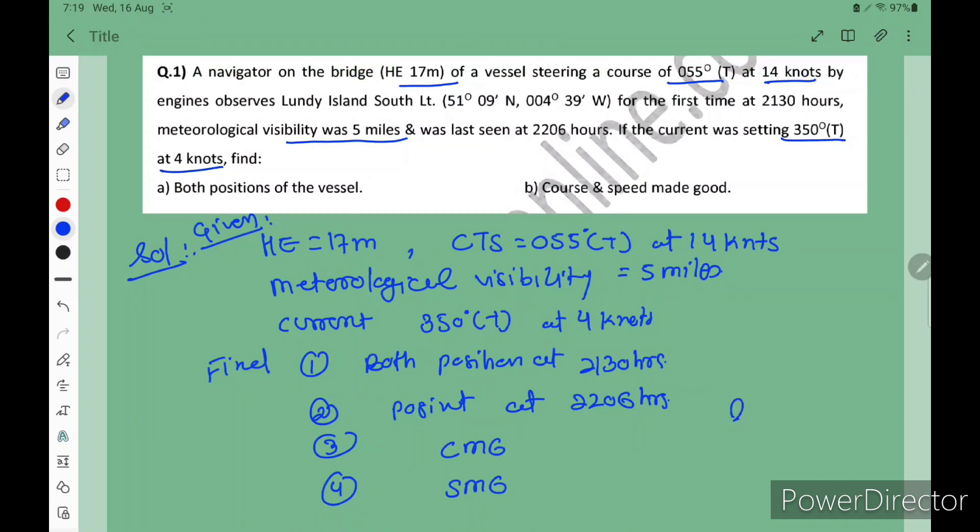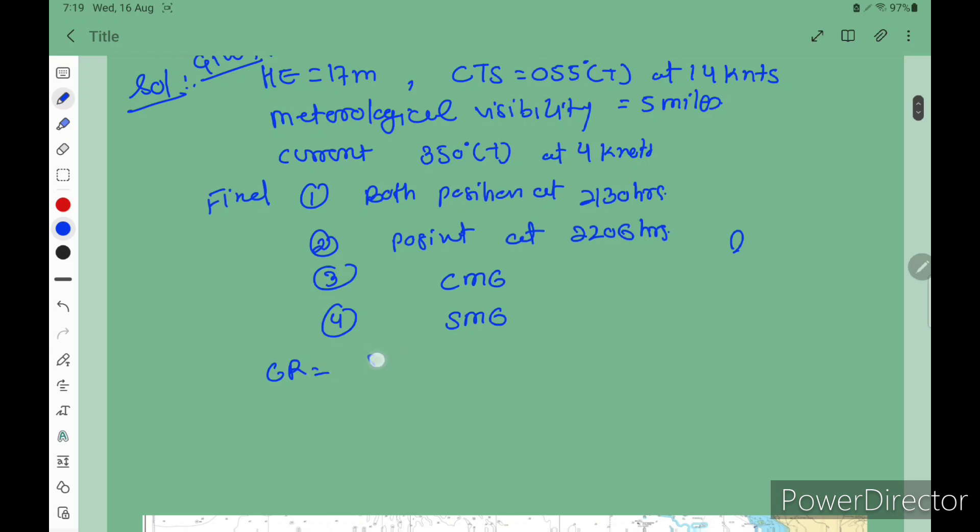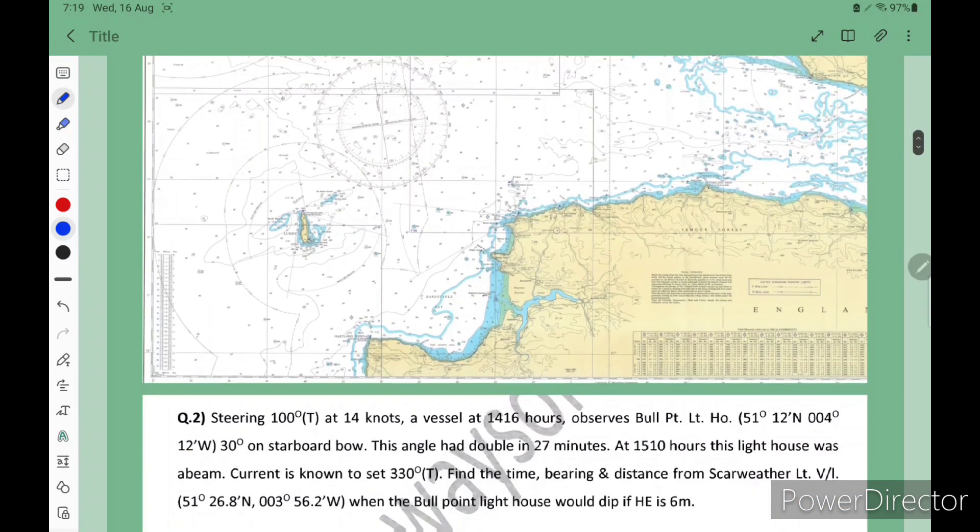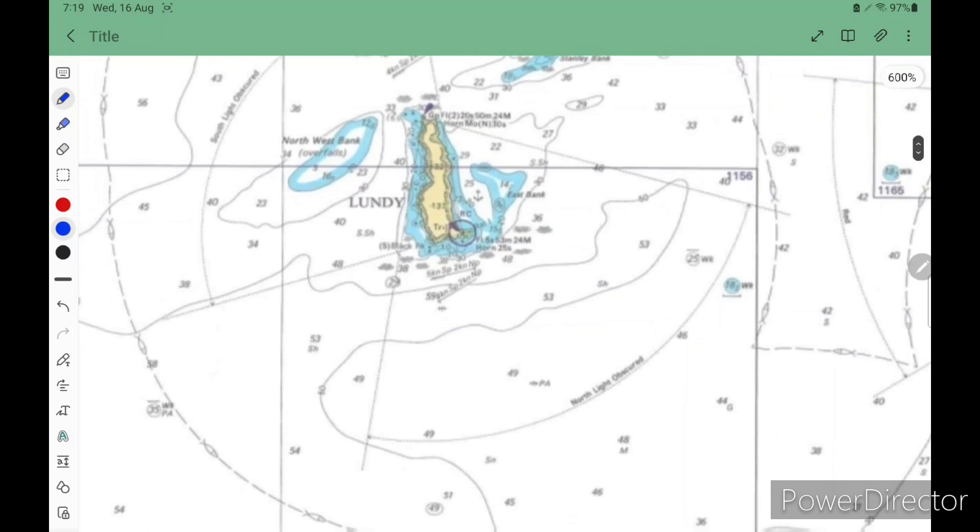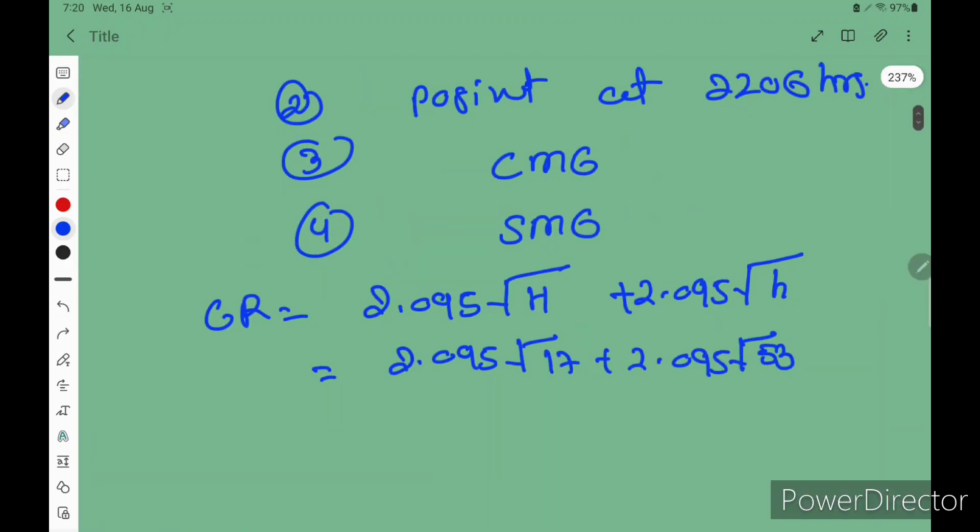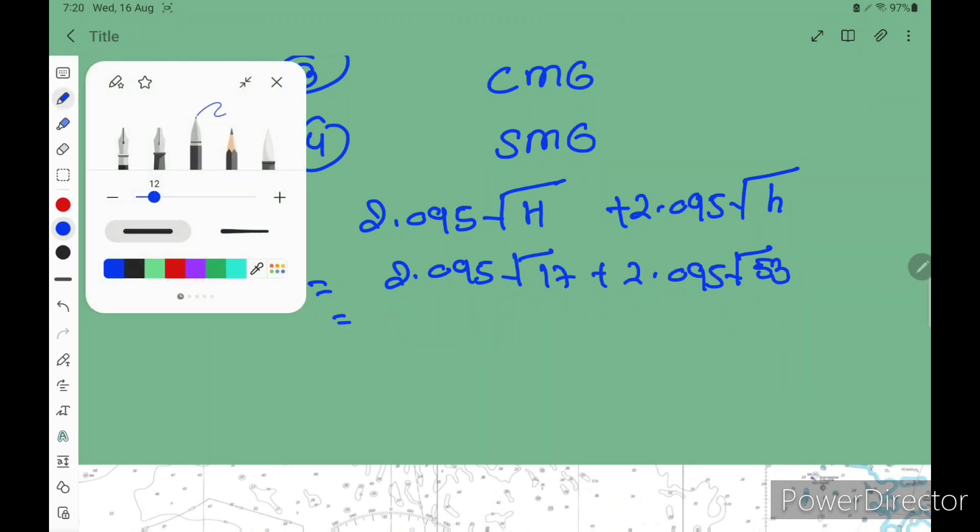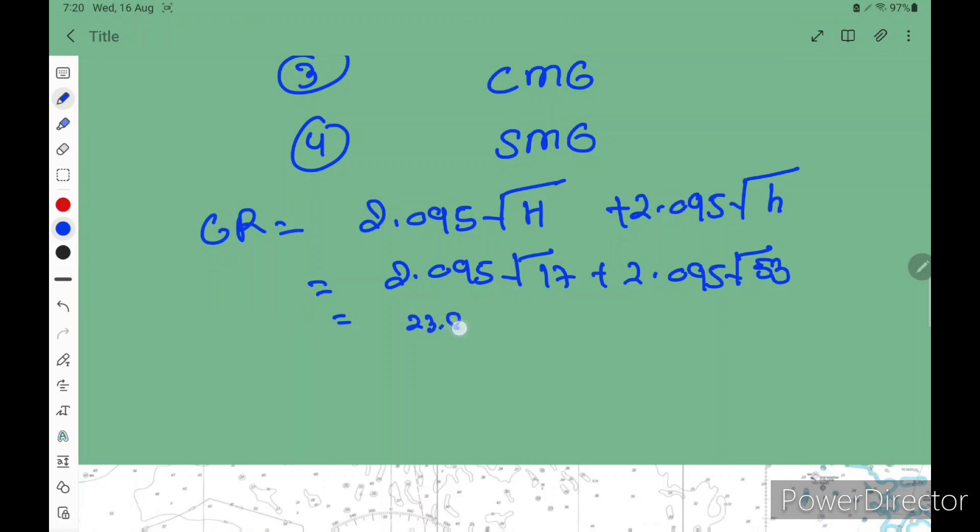Let's consider this is Lundi Island South Light. You have to calculate GR and LR. How to calculate GR: 2.095 under root height of I plus 2.095 under root small h which is height of lighthouse. So 2.095 times root 17 plus 2.095, height of lighthouse on the chart is 53. If you calculate you will get 23.89 nautical miles. And if you see LR by graph you will get 14 nautical miles. So which one is less? 14 nautical miles, so we have to take this one.